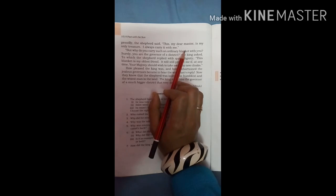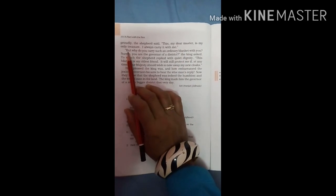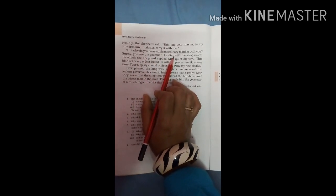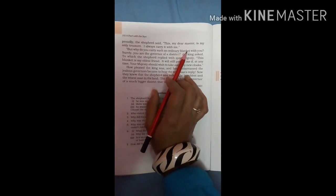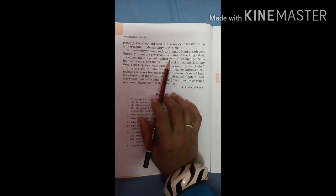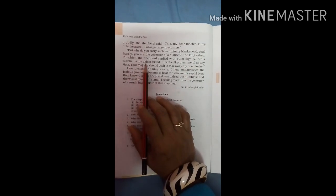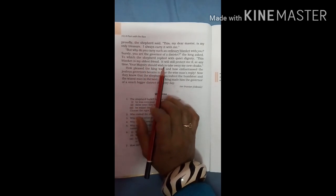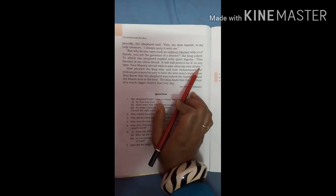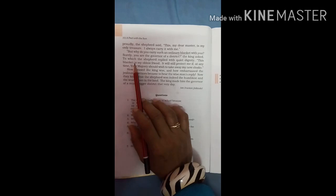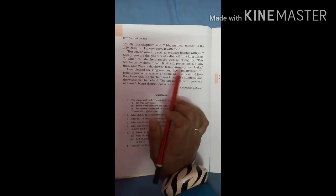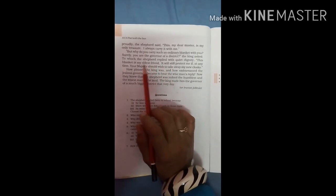But why do you carry such an ordinary blanket with you? Surely you are the governor of a district. The king asked why he carries an ordinary blanket when he is the governor of a district. To which the shepherd replied with quiet dignity, this blanket is my oldest friend. It will still protect me if at any time your majesty should wish to take away my new cloaks. The shepherd said that this blanket is his very old friend, it will always protect him, and even if the king takes away his new clothes, this old friend will remain with him.